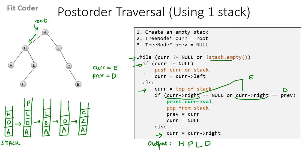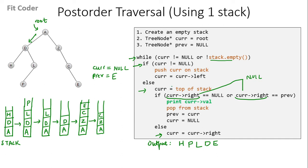In the next iteration, `current` is not equal to null, so we push `current` on the stack, and `current` becomes equal to left of E, which is null. In the next iteration, stack is not empty, so `current` becomes equal to top of stack, which is E. Right of E is null, so this if condition is true. We print the value of `current`. We pop from the stack. We set `previous` equal to `current`, and `current` equal to null. In the next iteration, stack is not empty. `Current` becomes equal to top of stack, which is C. Right of C is E, and `previous` is also E, so this condition is true. We print the value of `current`. We pop from the stack. We set `previous` equal to `current`, and `current` equal to null.